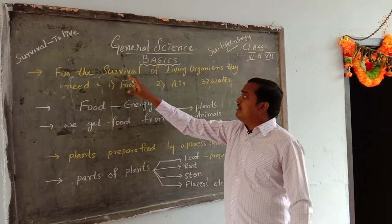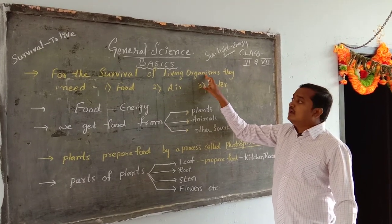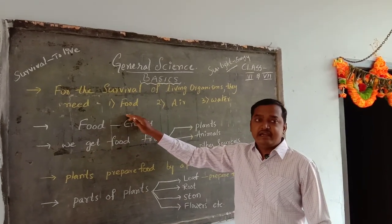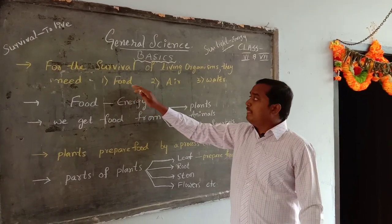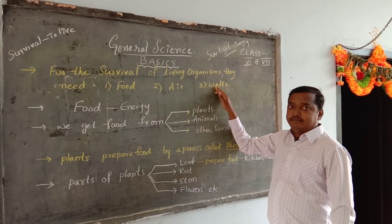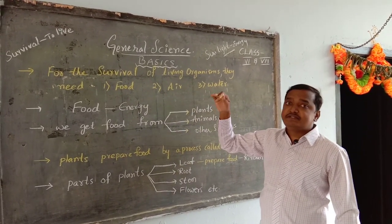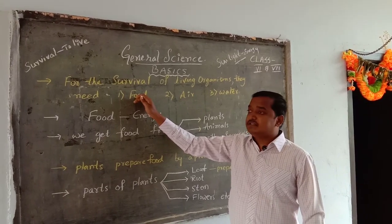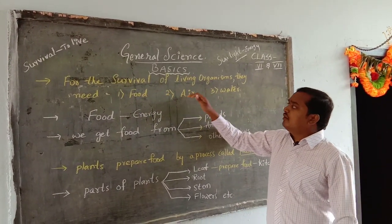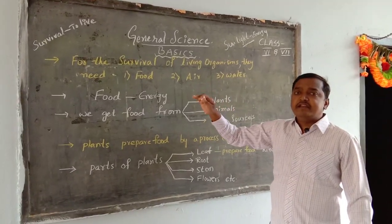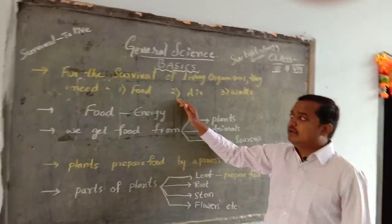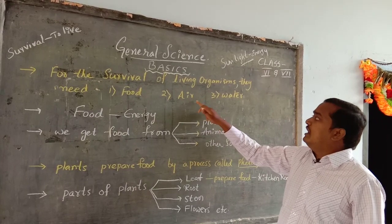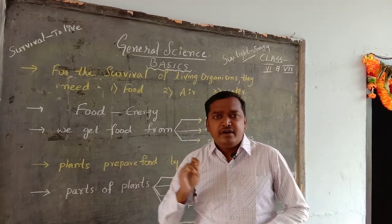For the survival of living organisms — survival means to live — they mainly need food, air, and water. If any of these three things is not available properly, in the coming future they are going to die. So it is compulsory for living organisms to have food, air, and water.